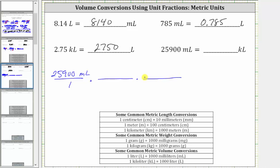Let's first convert milliliters to liters. We want milliliters to simplify out, and therefore we have to have milliliters in the denominator and liters in the numerator. Because one liter equals 1,000 milliliters, the first unit fraction is one liter over 1,000 milliliters. We have milliliters divided by milliliters, therefore milliliters simplify out, leaving us with liters — but we want kiloliters.